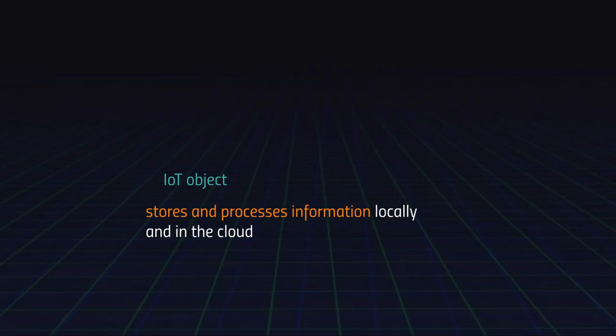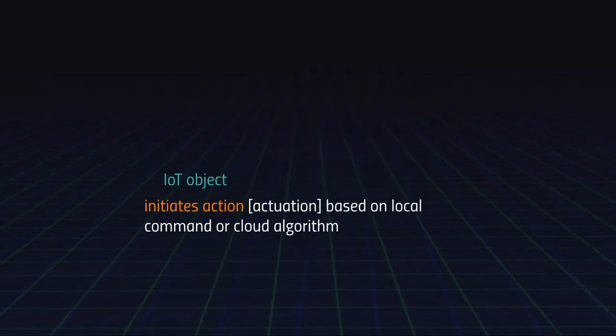An object participating on the Internet of Things also has the ability to store and process information. This means it is able to extract data from its environment as established through sensors, but it can also process that information and share it with the global information network — share it with a cloud, maybe, if this is part of some sort of cloud ecology. If this object is part of some sort of stack, then it automatically shares that information with the stack and is able to react based on the information which returns to it from the stack.